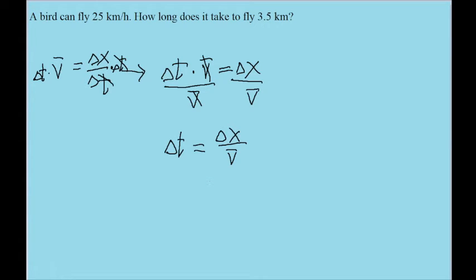Like this. Now all we have to do is just plug in the values given to us by the problem. In this case, the position is going to be 3.5 kilometers, the change in position rather, since that's the distance the bird is traveling. And the speed is 25 kilometers per hour.